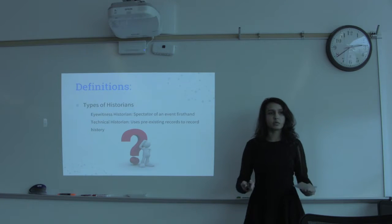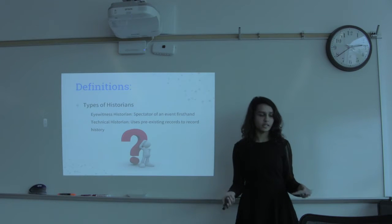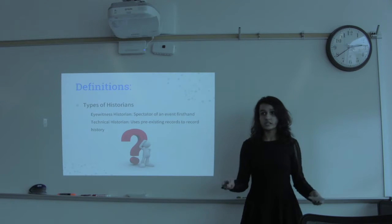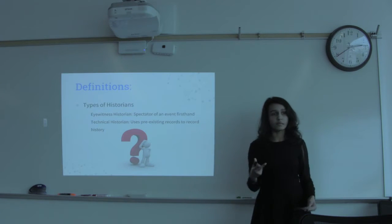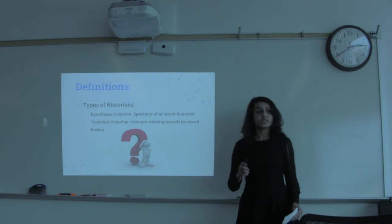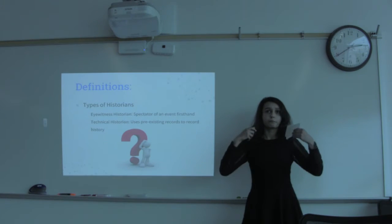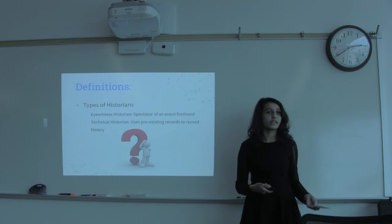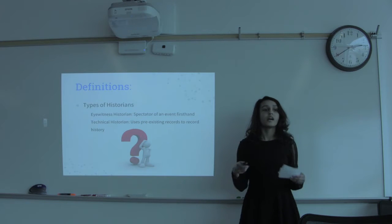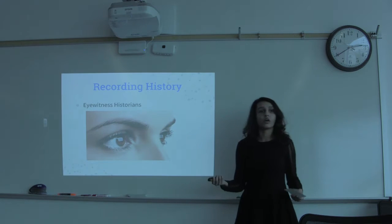Now for the next one, the types of historians which have been stated by the historian as a perspective by Arthur Schlesinger Jr. The different types of historians: we have two types in this instance. The eyewitness historian, which is a historian who witnesses an account as it happens. And then the technical historian, which is a historian that uses documentation that has been provided to record and write a form of history according to those documents.